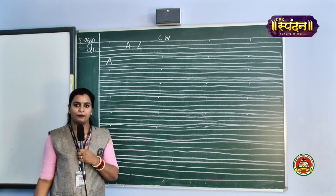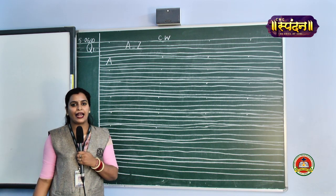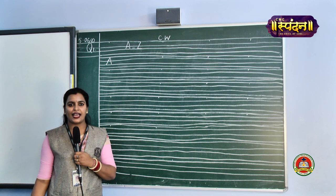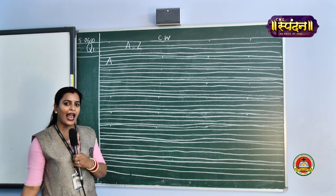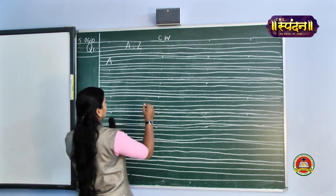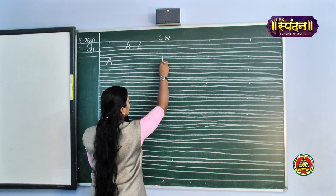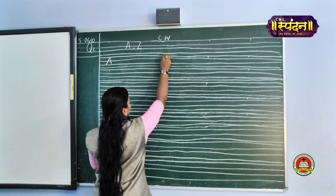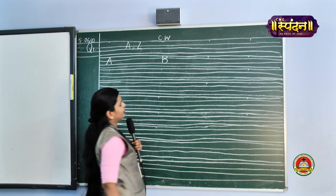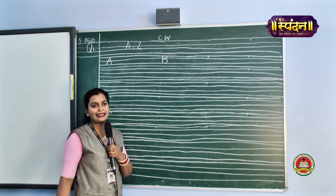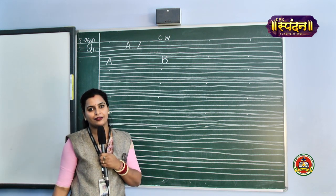Next we are going to take alphabet B. B stands for ball, B stands for balloon, B stands for boat, B stands for butterfly too. Come on, let us write B. Start from the pink line, bring it to the black bar, and then make a curve. This is alphabet B.